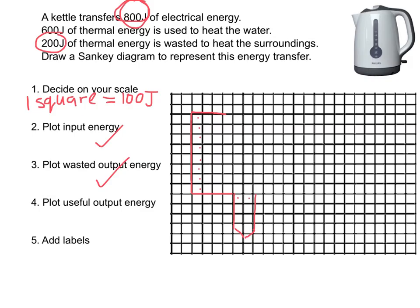Next up, we need to plot the useful energy outputs. Before I do that, I'm going to extend the line at the top, and then the end of the line is where my arrow is going to start. And our useful energy output is 600 joules, which is going to be six squares on our scale.